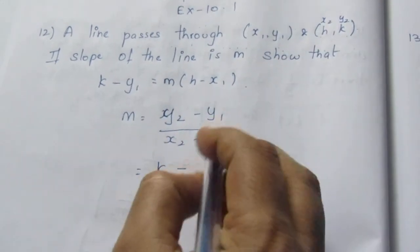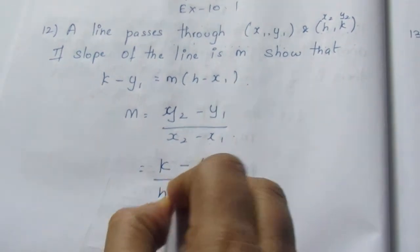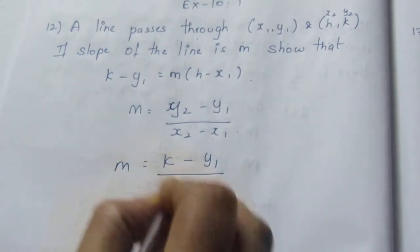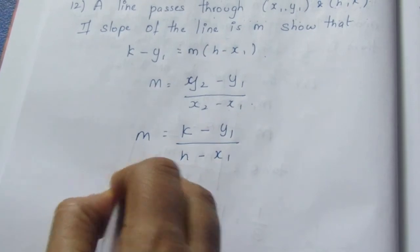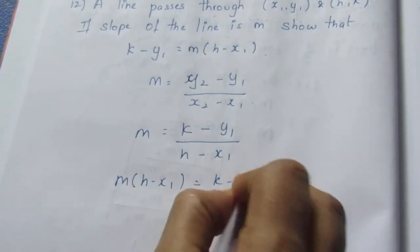k minus y1 by h minus x1 is equal to m. Cross multiply this. m into h minus x1 is equal to k minus y1.